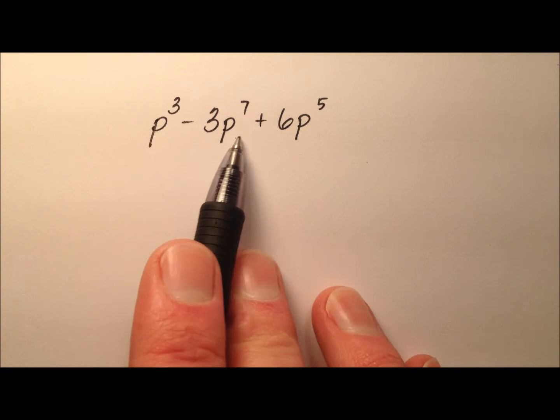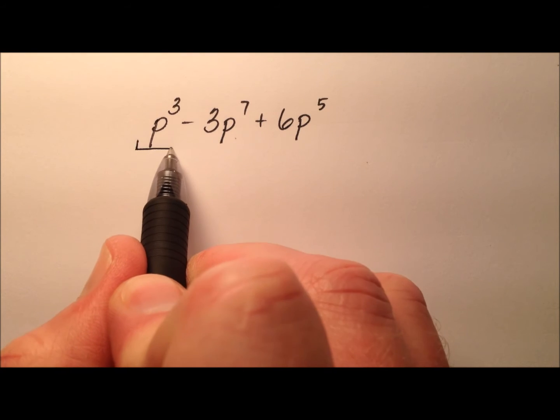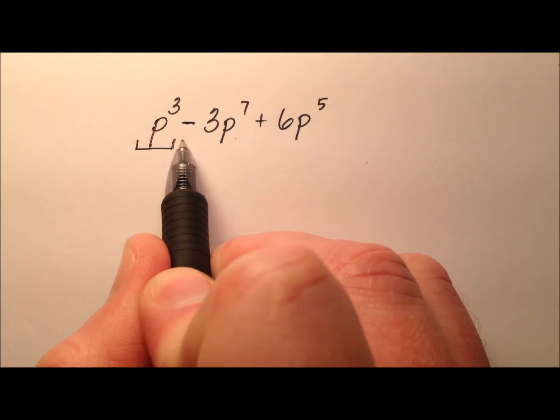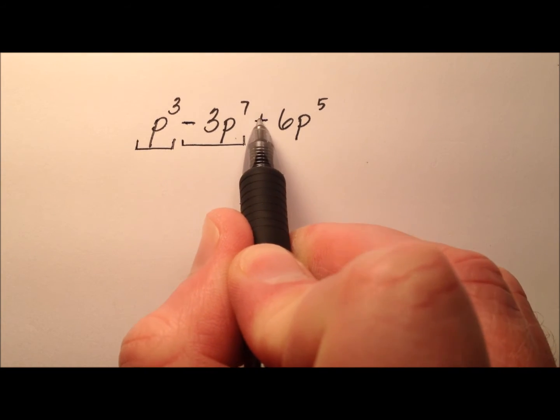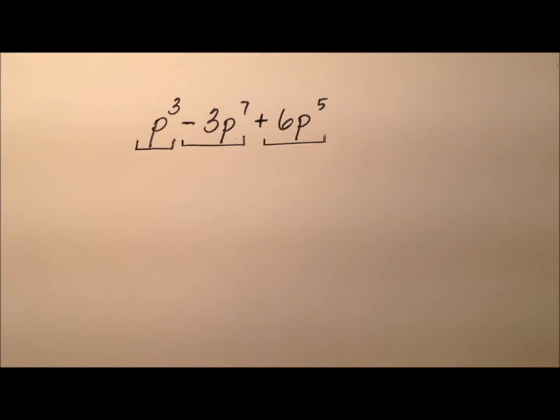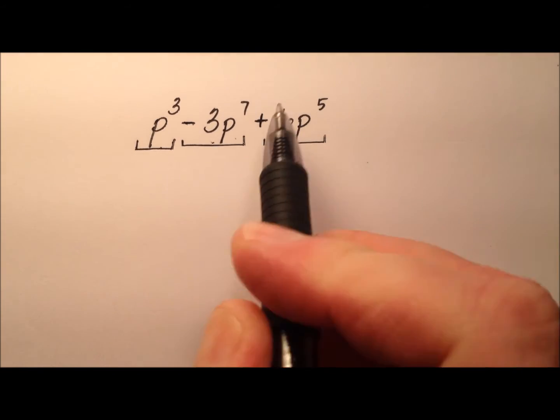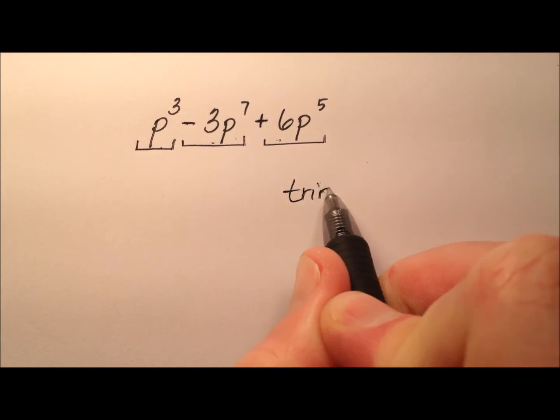Okay, so there are one, two, three terms it looks like. We have a p cubed, a negative 3p to the seventh, and a positive 6p to the fifth. So there are three terms, so we know this is a trinomial.